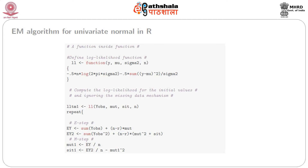We first generate two sub-vectors. One is y_obs, which is all those values for which the entry is not NA — given as !is.na(y) — so it gives all values for which y has a numeric value. y_miss contains all those observations for which y is NA. We then find N, which is the total number of observations for y, and R, which is the total number of available observations — that is, the length of y_obs.